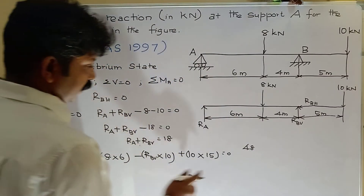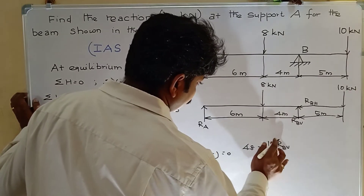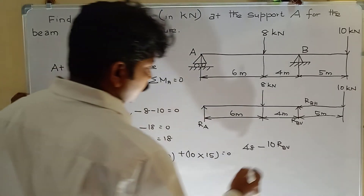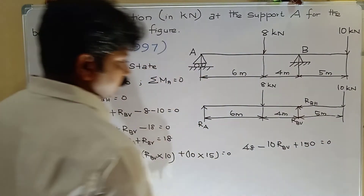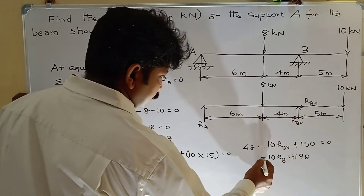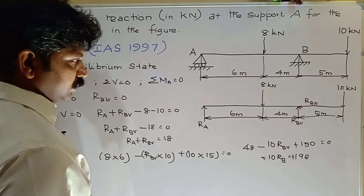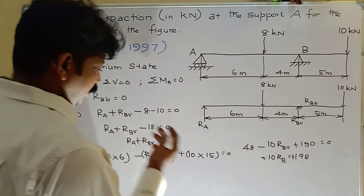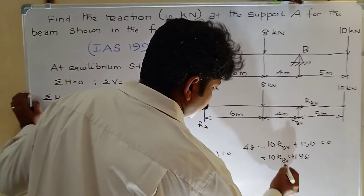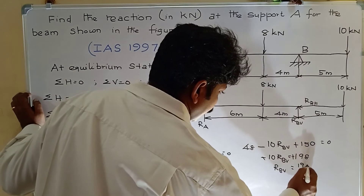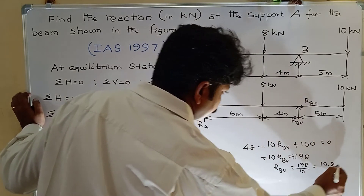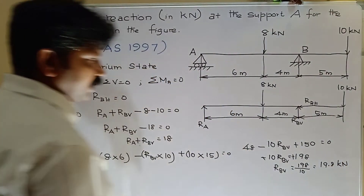48 minus 10 RB_V plus 150 equal to zero. So negative 10 RB_V equal to negative 198. The negatives cancel, giving RB_V equal to 198 divided by 10, so RB_V equal to 19.8 kilonewtons.